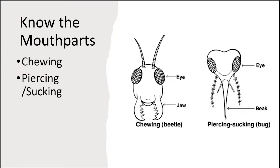We have chewing insects — the example in the picture here is a beetle, but caterpillars also have chewing mouth parts. Piercing-sucking is kind of like a beak or a straw where they pierce a fruit or leaf and suck out the plant juices.